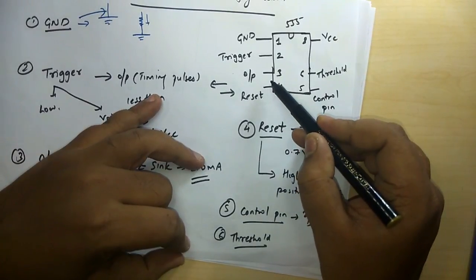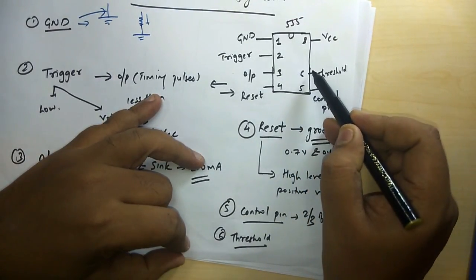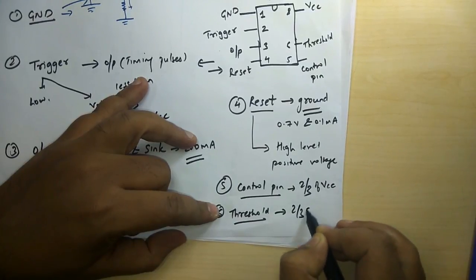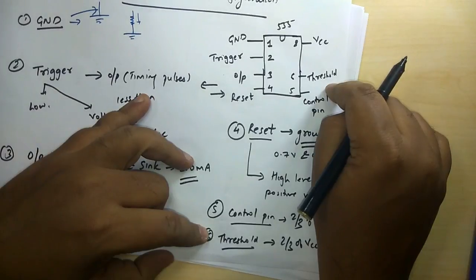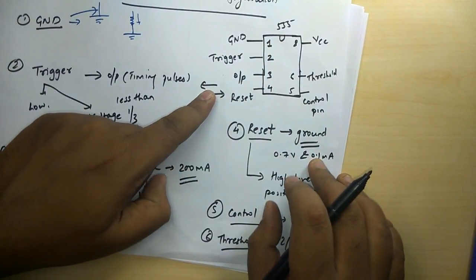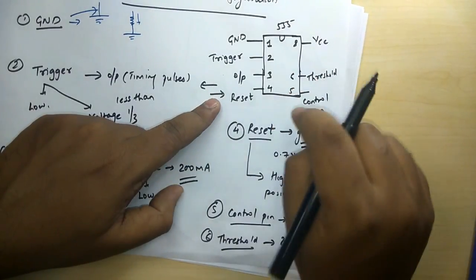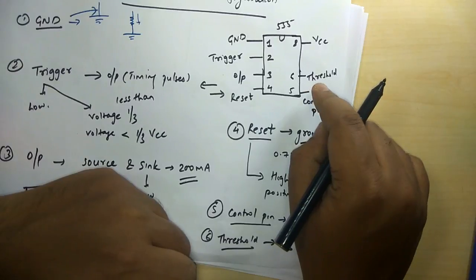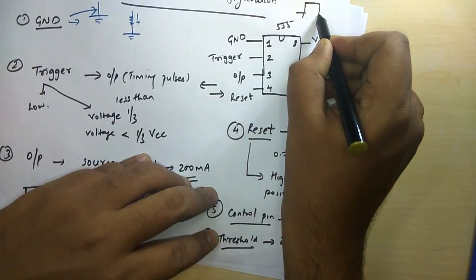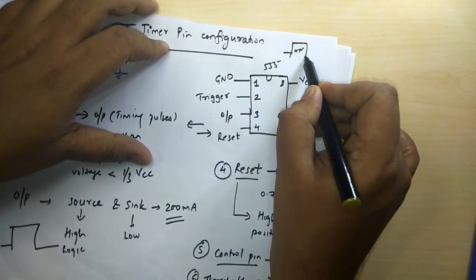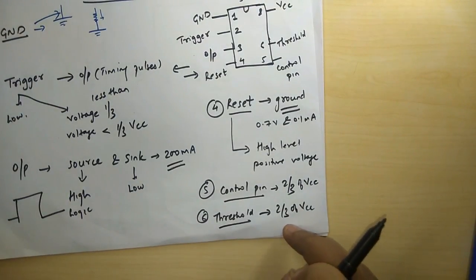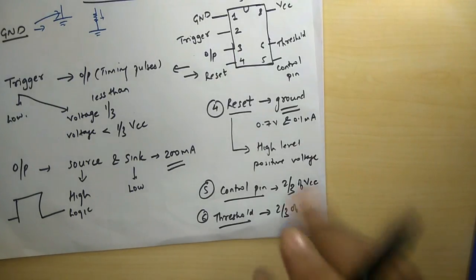Pin 6 is the threshold pin. The output pulse's on-period will end once the voltage on this threshold pin reaches two-thirds of VCC. As long as the voltage has not reached 2/3 VCC, the output continues in the on period. The moment it reaches 2/3 VCC, the timing circuit closes down the pulse — the on period ends and the off period begins. So the timing cycle is completed when the voltage on this pin is equal to or greater than 2/3 of VCC.